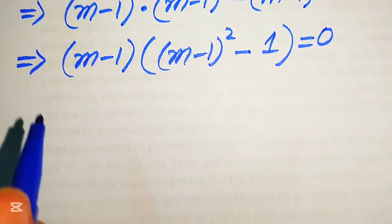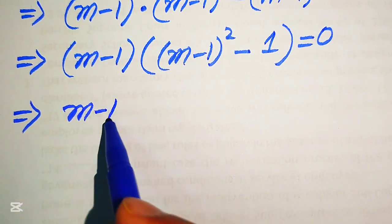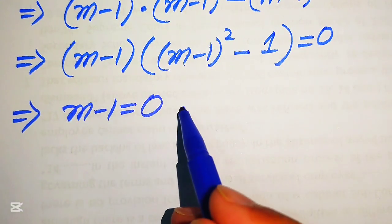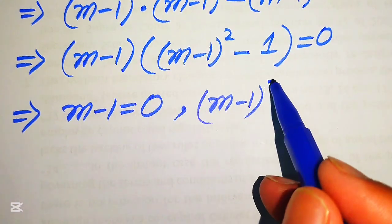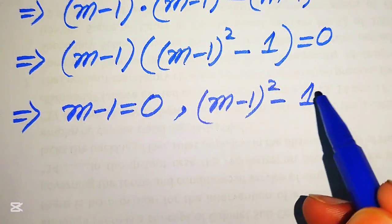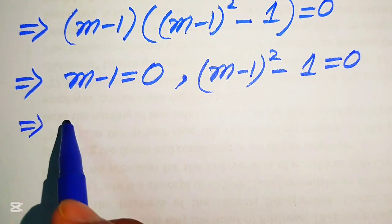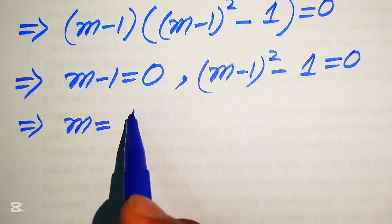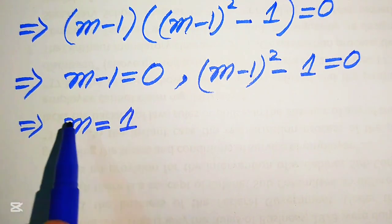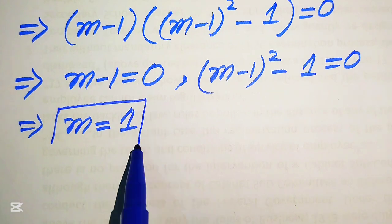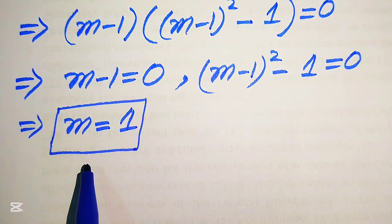We divide this into two cases. The first case is m minus 1 = 0, and the second case is (m - 1)² - 1 = 0. From the first case, m = 1. This is the first real root of the given equation.